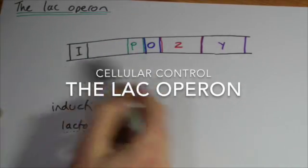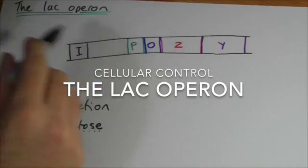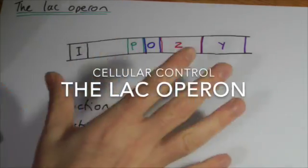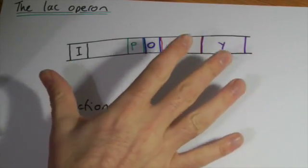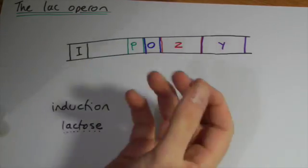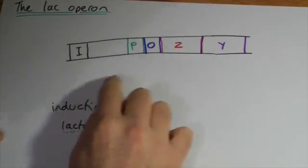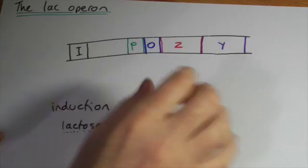Alright, so we're going to do the lac operon, which is a classic bit of biology, and the idea behind this is we've got all these genes in organisms, but why are some of them switched on or how, more importantly, are some of them switched on or switched off?